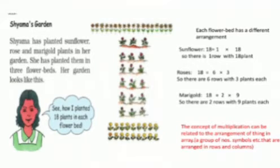Multiplication can be related to arrangement of things in array. So what is array? A group of numbers or symbols etc. that are arranged in rows and columns.